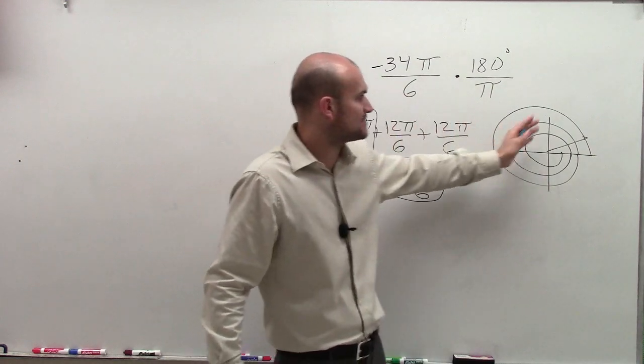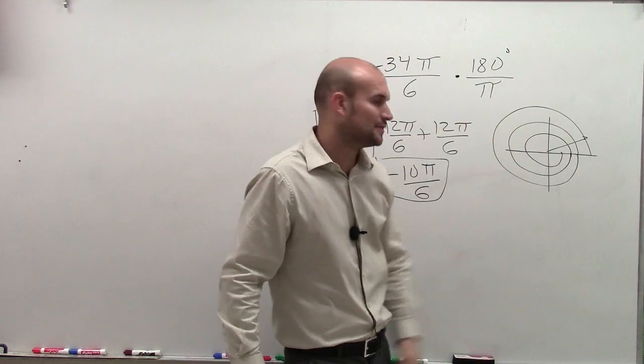So by adding 12π over 6, 12π over 6, I've reduced the amount of revolutions that we've had to do.